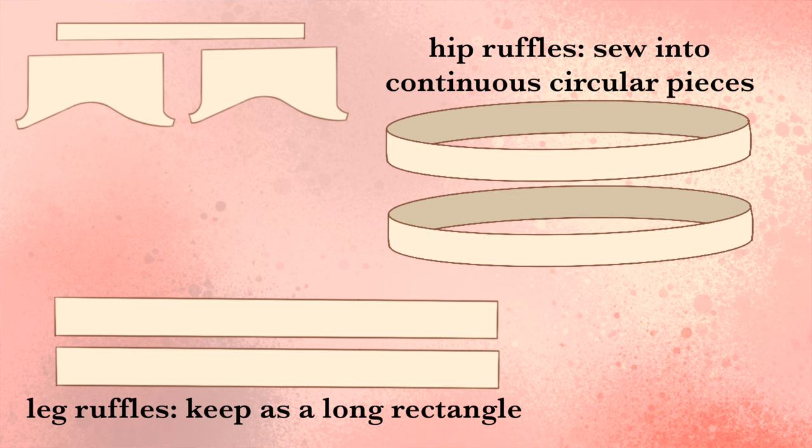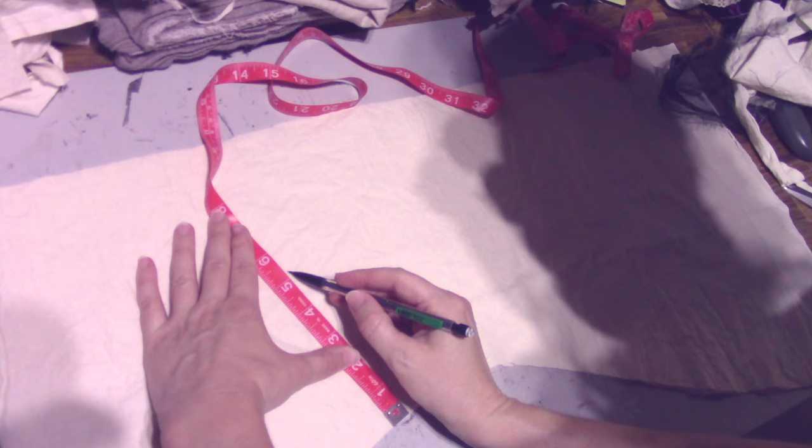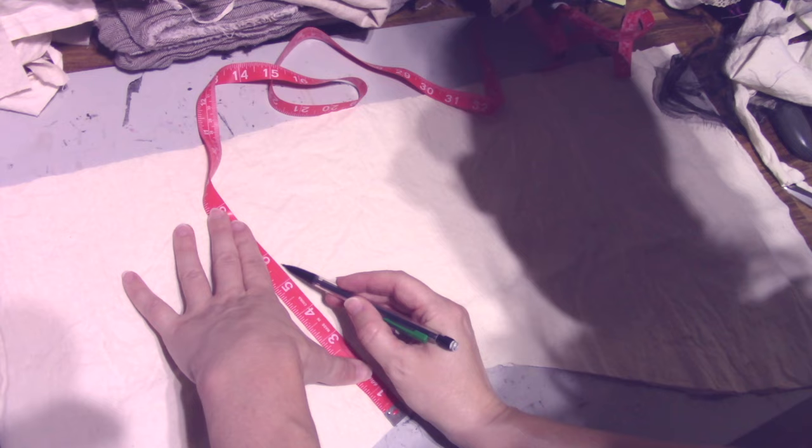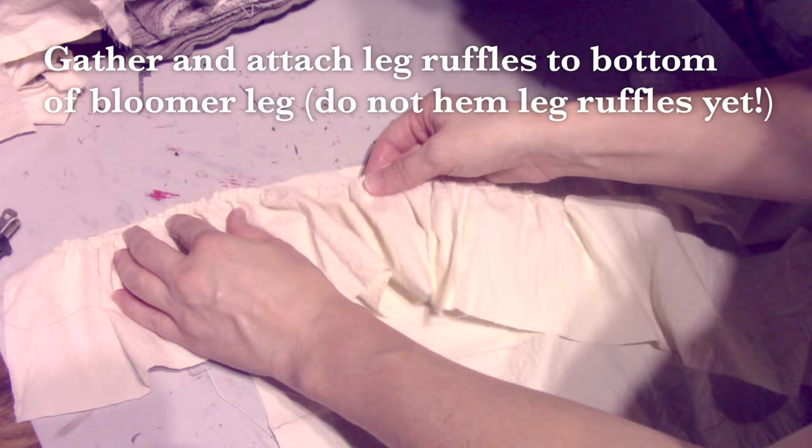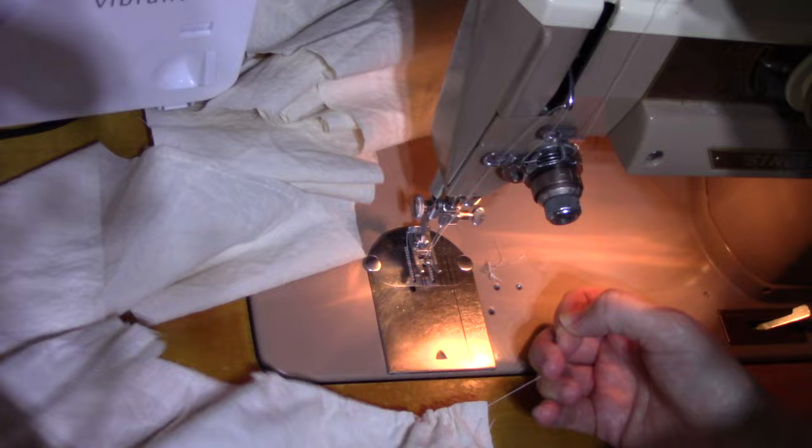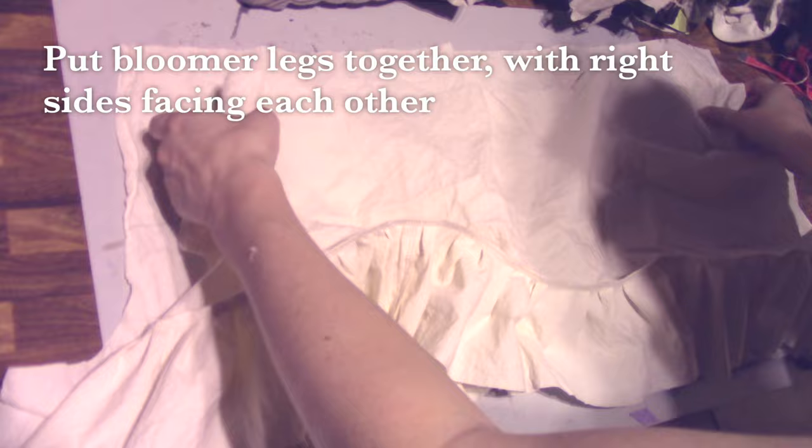The leg ruffles should remain as one long rectangle for now, but you'll want each hip ruffle to be sewn into a continuous tube. If you haven't yet, mark out your hip lines using chalk, fabric pen, or just a regular old pencil, which is what I use. Now attach your leg ruffles to the bottom of the leg. You may want to baste the top to keep them gathered, but I've made a lot of these, so I usually just gather as I go, but whatever works for you is what you should be doing.